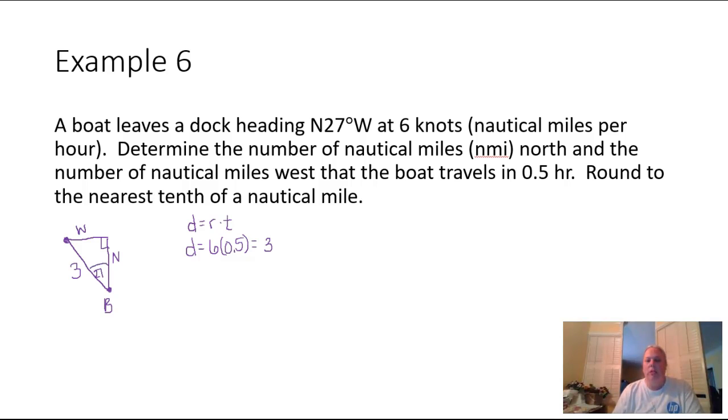Now, with respect to our angle of 27 degrees here, the 3 represents the hypotenuse of the right triangle because it's across from the right angle. The W up here represents the side opposite from the angle, and that makes the N be the adjacent side of our right triangle.